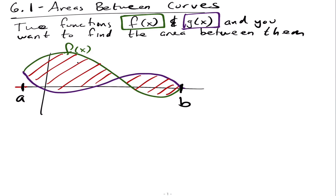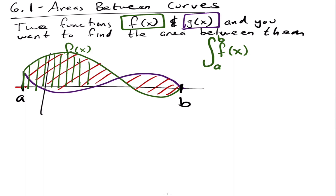Let's make a dynamic picture. If I draw the area represented by the integral of f of x from a to b, that would be the area underneath f of x — shown here with vertical bars. Notice this part would be positive, and the area below the x-axis would be negative.